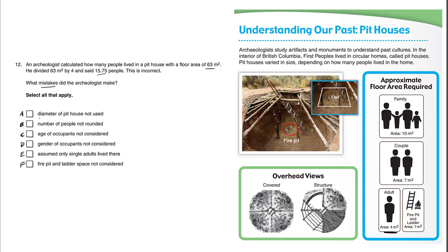Choice A reads: diameter of pit house not used. Not using a diameter is not really a mistake because diameter is used to find the area, and the area is already given, so there's no need to find the diameter. So this is not a correct mistake.